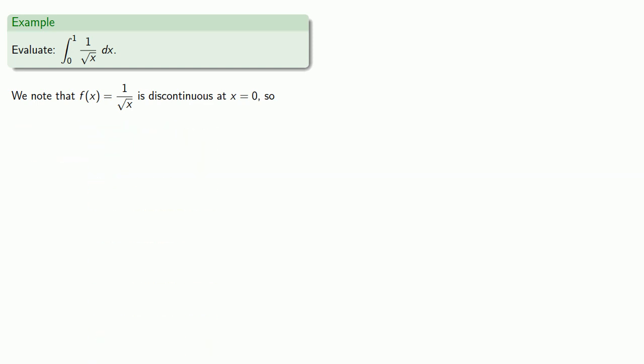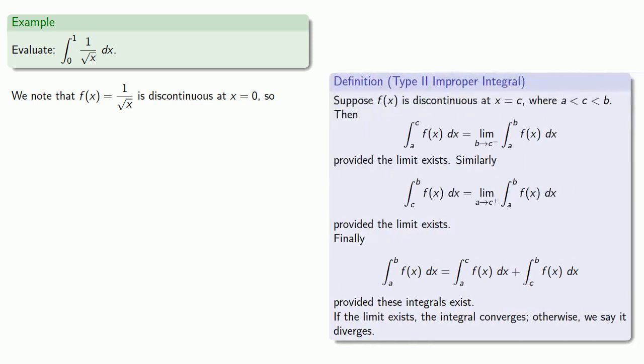We have a Type II improper integral. Since our lower limit is the point of discontinuity, we'll limit around that. We'll take our limit as the lower bound goes to 0 from above.